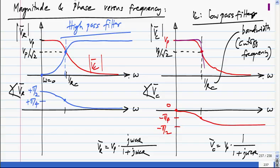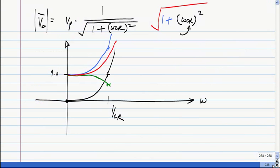Student asks whether 1/RC is a point of inflection. The instructor responds: the second derivative being 0 would define that, but this function is monotonic so it is likely not a point of inflection. A student then asks whether the capacitor is a low pass filter. The instructor clarifies: it is not the capacitor itself, but in the RC circuit, if the capacitor voltage is taken as the output, that function is a low pass filter. At very high frequencies the capacitor becomes almost a short circuit, so the voltage across it is very small.